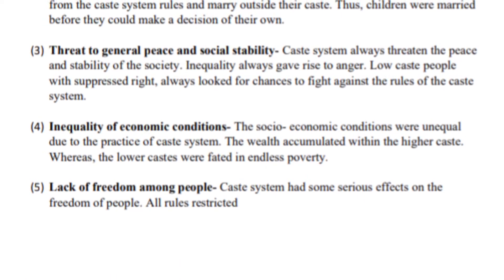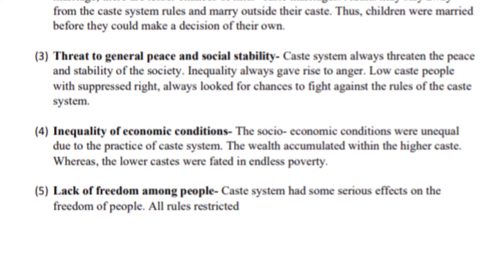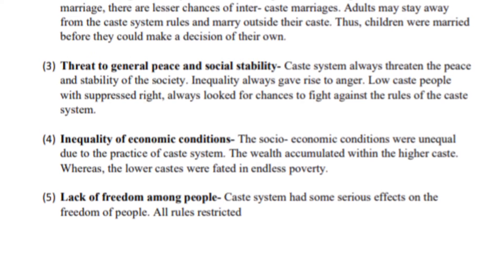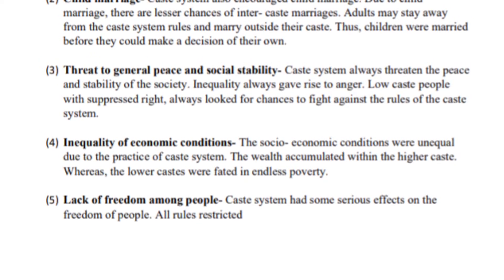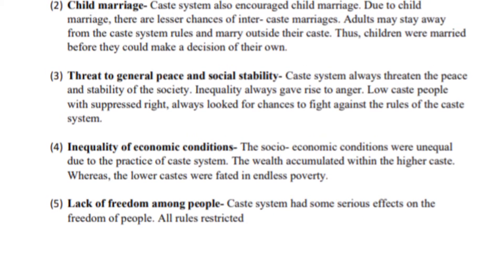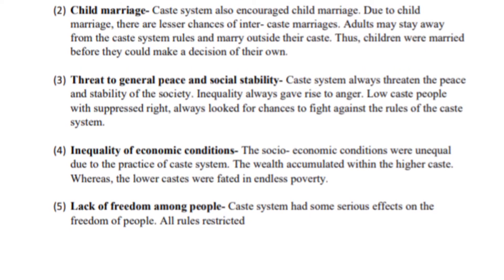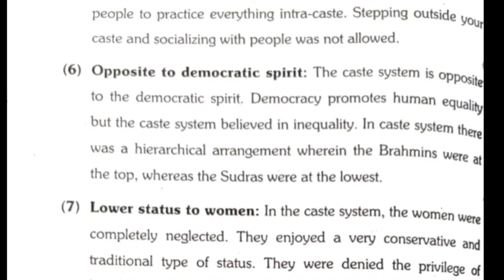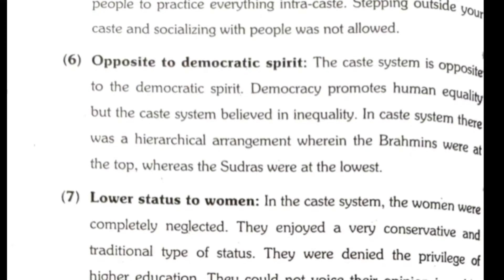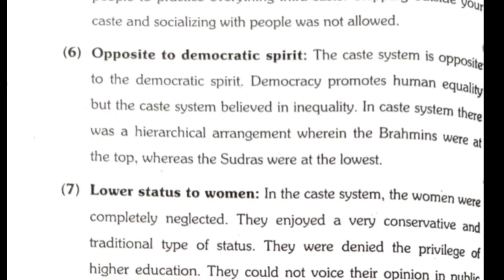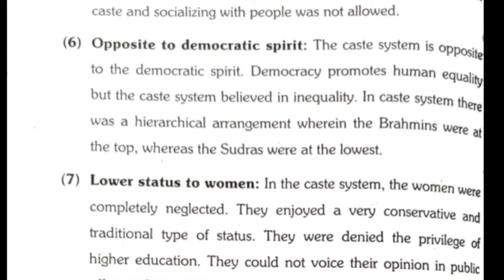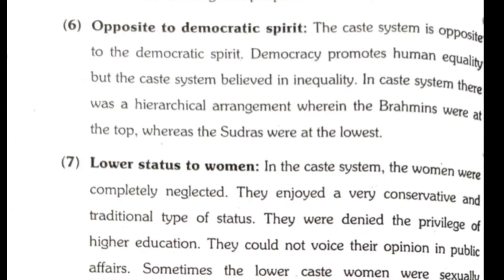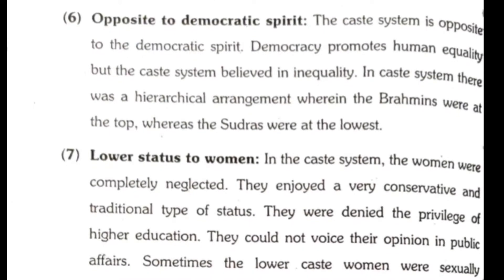Fourth, inequality of economic conditions. The socio-economic conditions were unequal due to the practice of caste system. The wealth accumulated within the higher caste, whereas the lower caste were fated to endless poverty. Fifth, lack of freedom among people. Caste system had serious effects on the freedom of people. All rules restricted people to practice everything intra-caste. Stepping outside your caste and socializing with people was not allowed. Sixth, opposite to democratic spirit. Democracy promotes human equality, but the caste system believed in inequality, with a hierarchical arrangement wherein the Brahmins were at the top, whereas the Shudras were at the lowest.